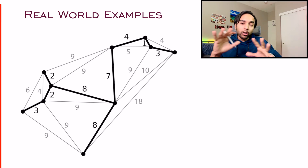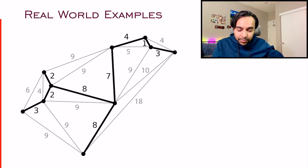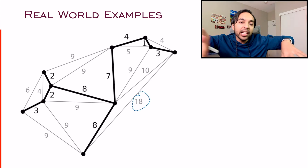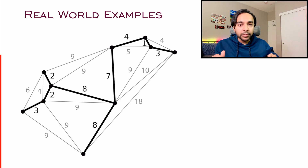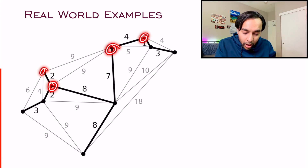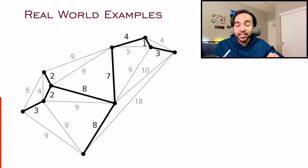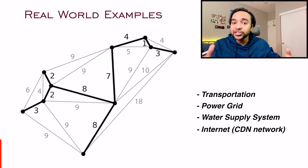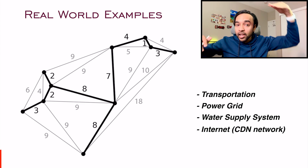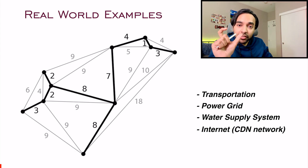Understanding a minimum spanning tree is very, very important — it is a concept that is used almost everywhere in every network. Think about it: you can have different cities and different distances between them, and if you have to lay down electric wiring, you want the cost to be minimum. That is where you use the minimum spanning tree. You can have several examples that work on the same concept: transportation, power grids, water systems, and even the internet. Content delivery networks, or CDNs, set up all throughout the world use the minimum spanning tree such that your request is served with the minimum distance.